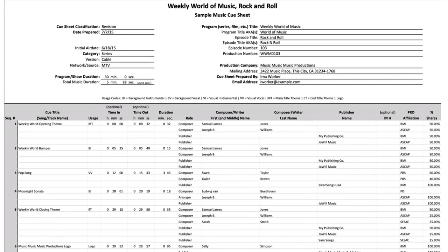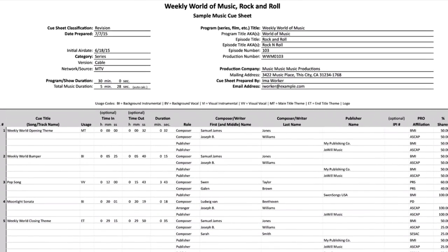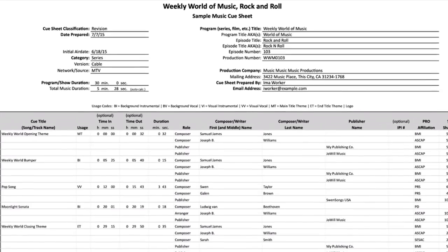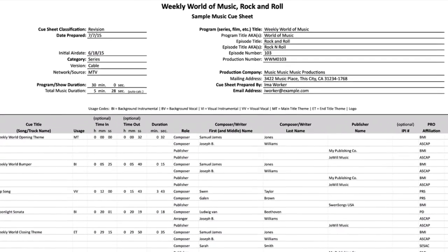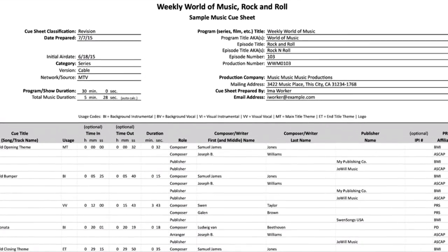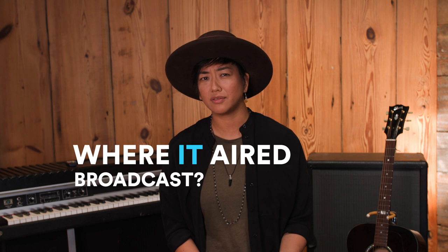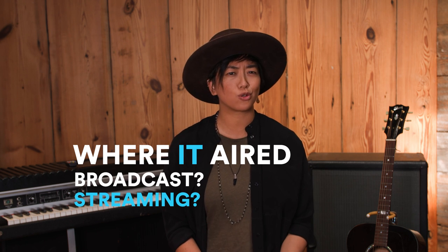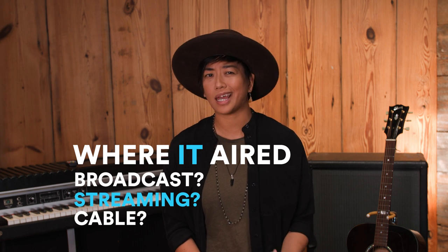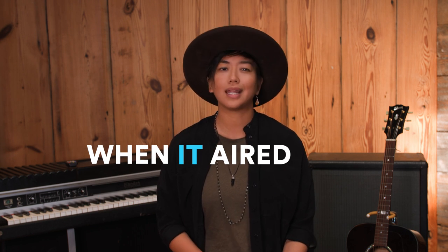Once we receive the cue sheet, we'll link that with the performance data we have about that AV program or work, which details where it aired — broadcast television, streaming, cable — when it aired, and how often it aired.